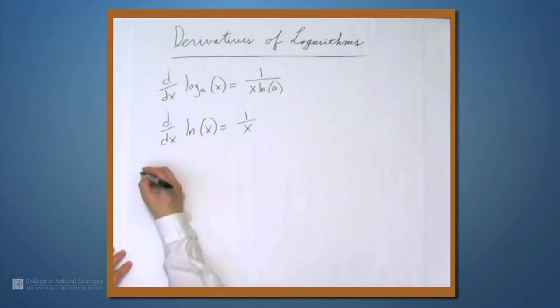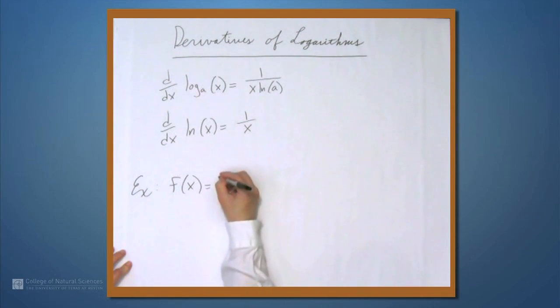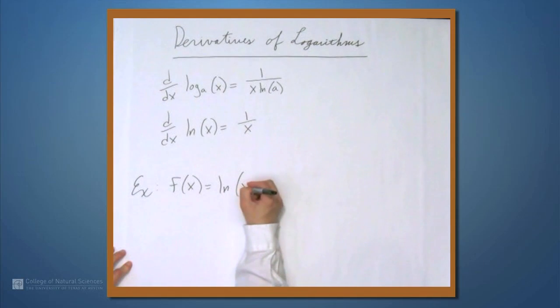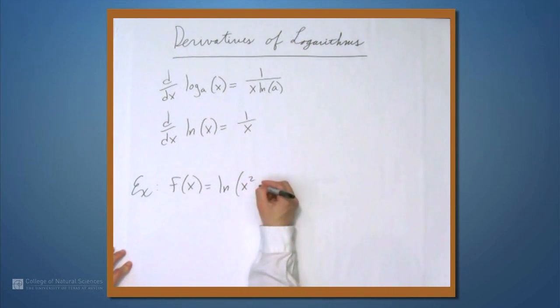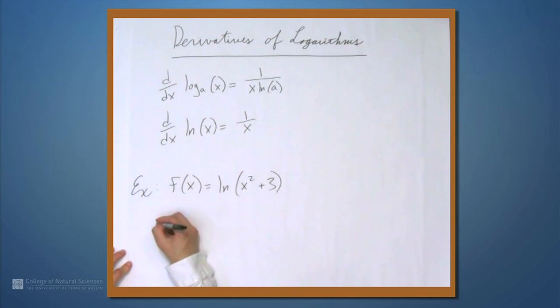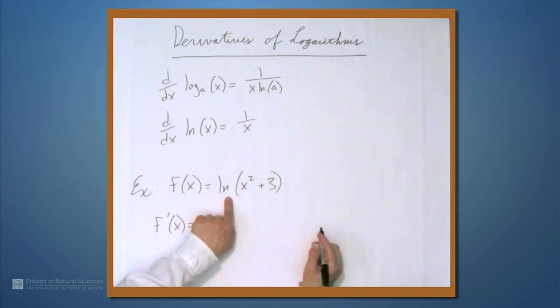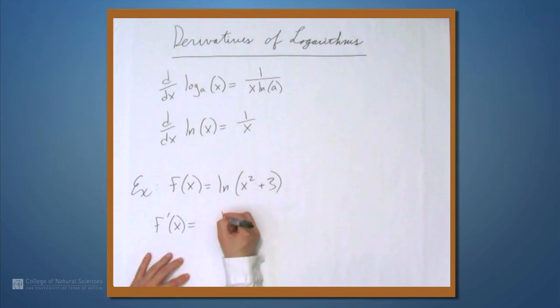Let's look at an example. Let's suppose that f is the natural log of x squared plus 3. Well, then f prime is going to be, by the chain rule, the derivative of natural log of whatever's inside here in place of x. So 1 over the stuff inside, x squared plus 3.